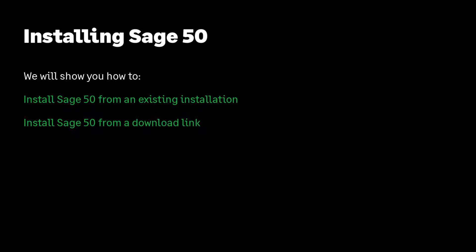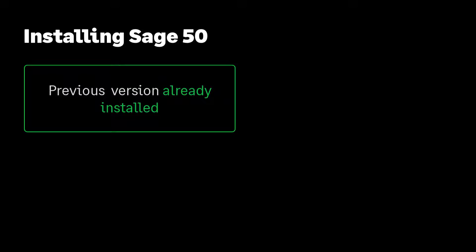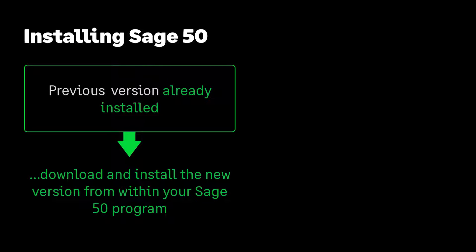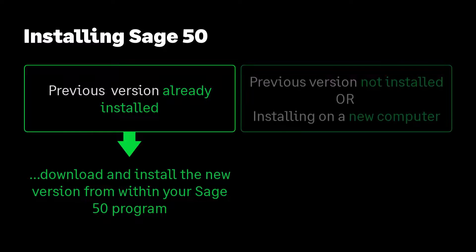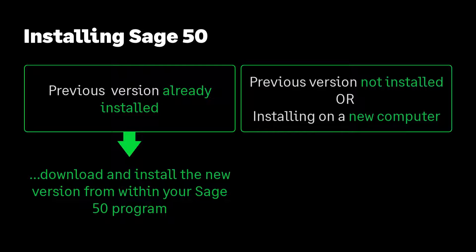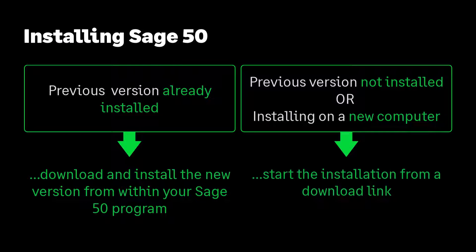Over the next few minutes we will show you the steps needed to install Sage 50 Accounting, whether you're installing your program from an existing version or from a download link. If the previous year's version of Sage 50 Accounting is already installed on your computer, you can download the new version and start its installation directly from within your Sage 50 program. If you don't have the previous year's version installed or you're installing on a new computer, you can start from a download link. This video will cover both scenarios.